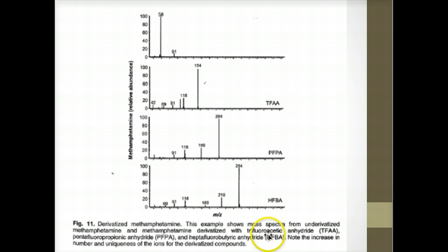TFAA, trifluoroacetic anhydride. And then PFPA is pentafluoropropionic anhydride. And the third is HFBA, which is heptafluorobutyric anhydride, have been used to derivatize the methamphetamine. And note the increase in the number and uniqueness of the ions for the derivatized compounds.